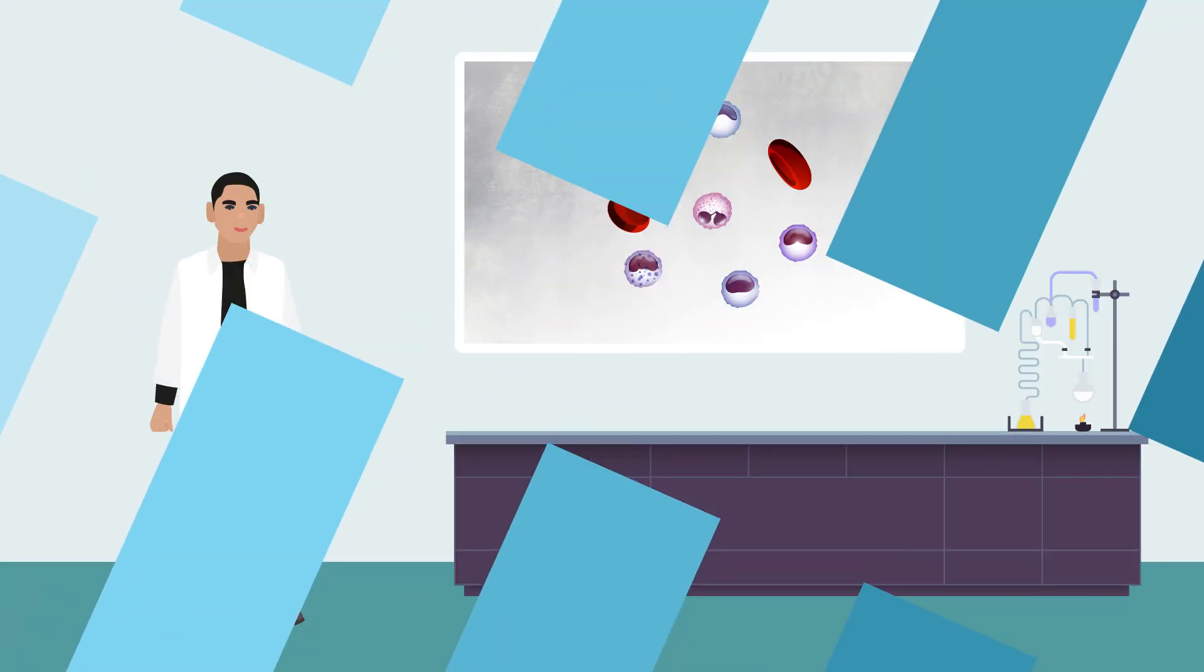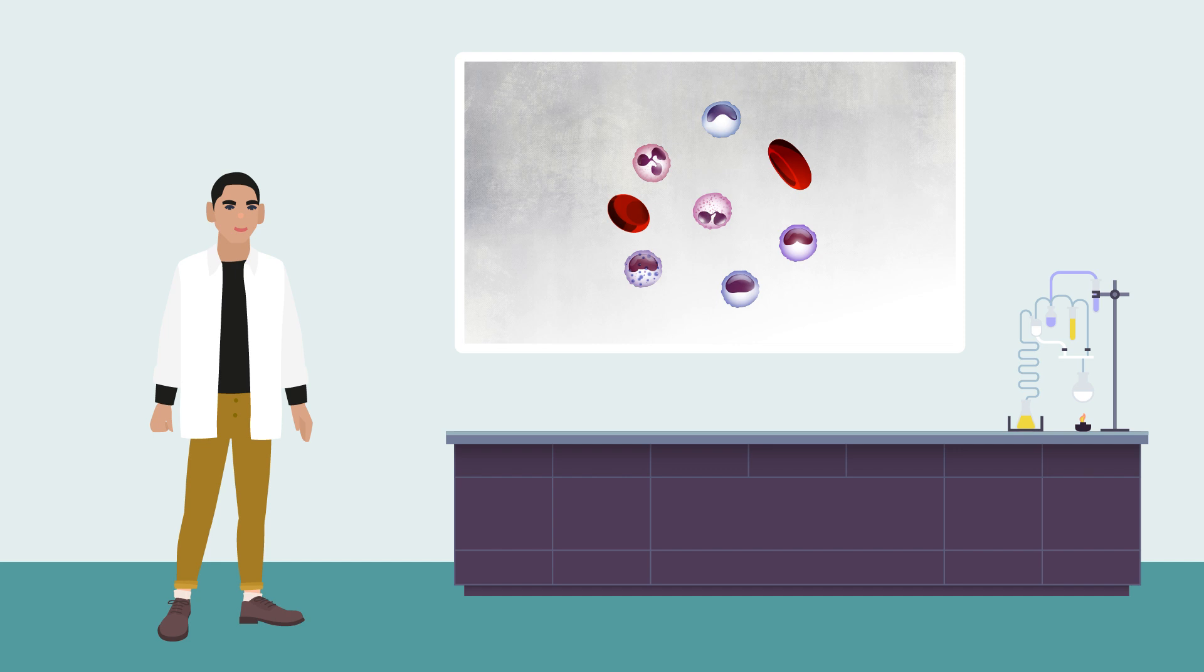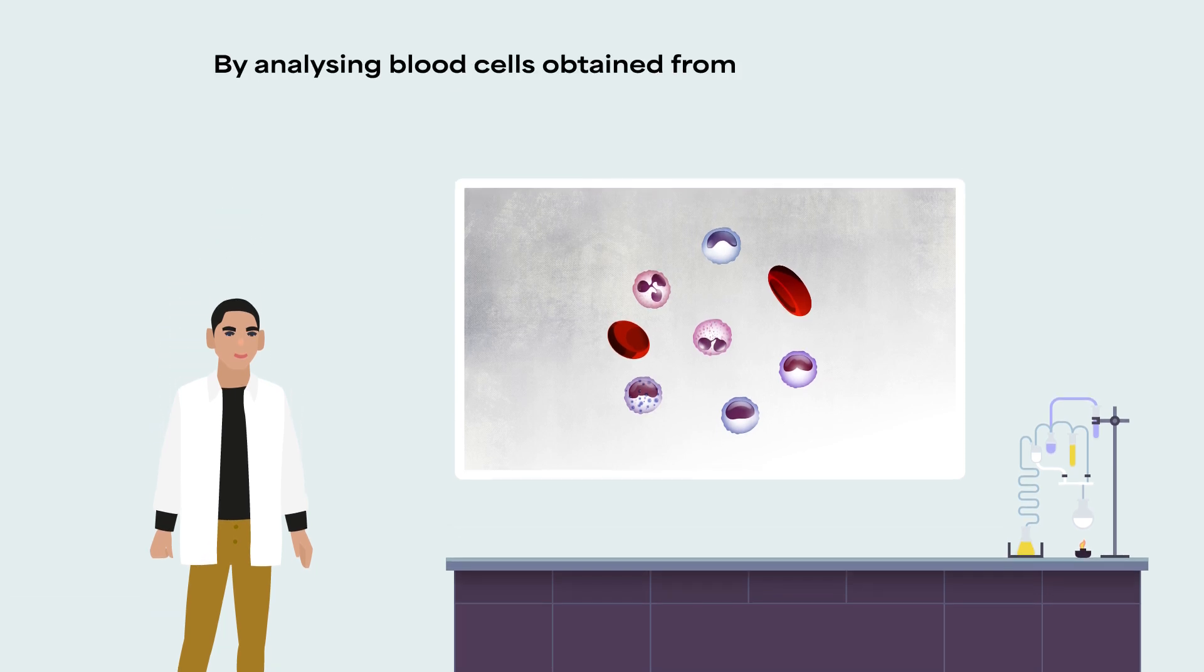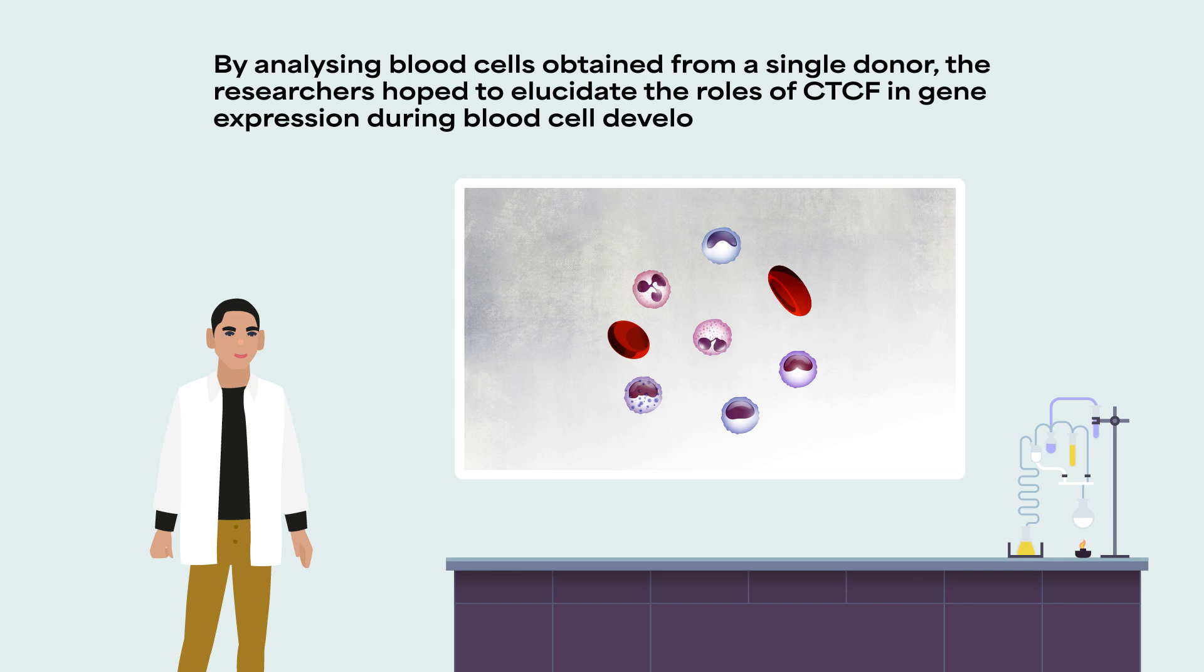Dr. Yong Cheng and his colleagues at the St. Jude Children's Research Hospital in Memphis hypothesized that CTCF might play a unique role in the production of blood cells. By analyzing blood cells obtained from a single donor, the researchers hoped to elucidate the roles of CTCF in gene expression during blood cell development.